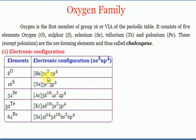You can see the common pattern: 2s²2p⁴, 3s²3p⁴, 4s²4p⁴, 5s²5p⁴, 6s²6p⁴. This is the general electronic configuration of the oxygen family. Another important point is the molecular formula.